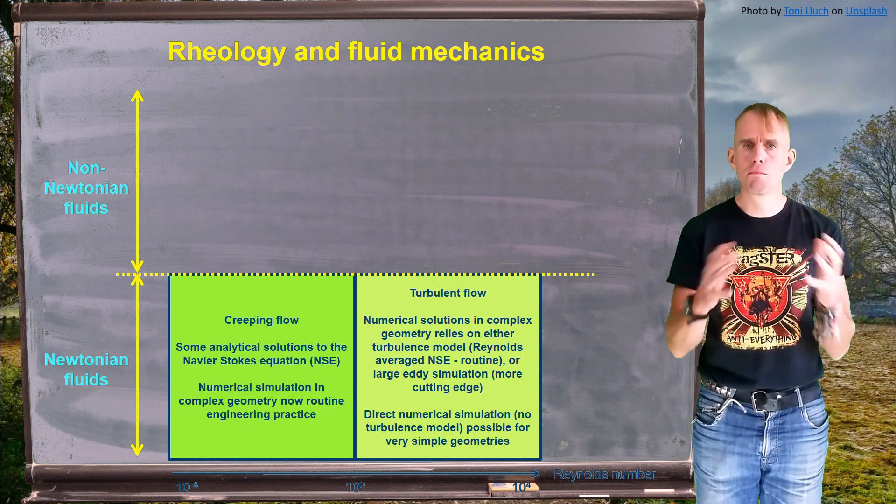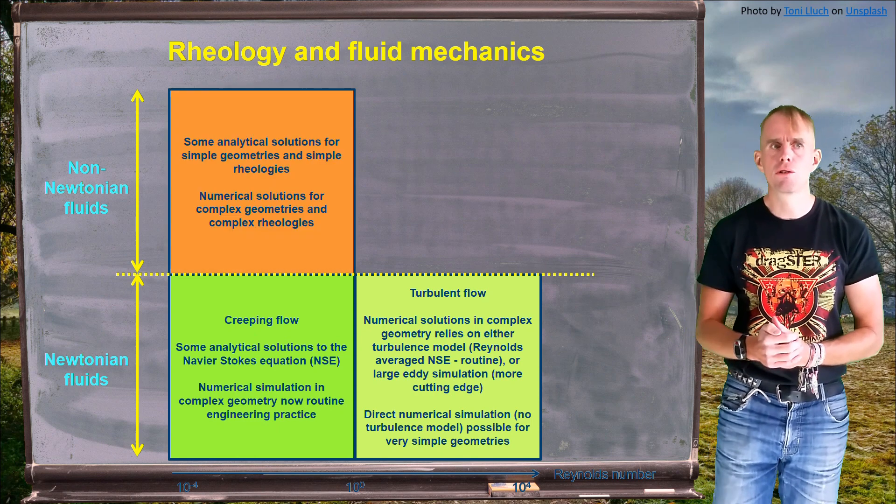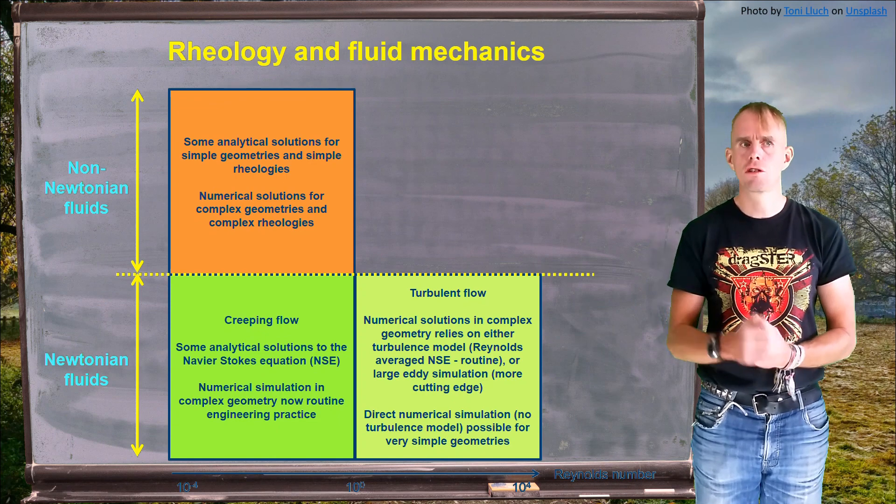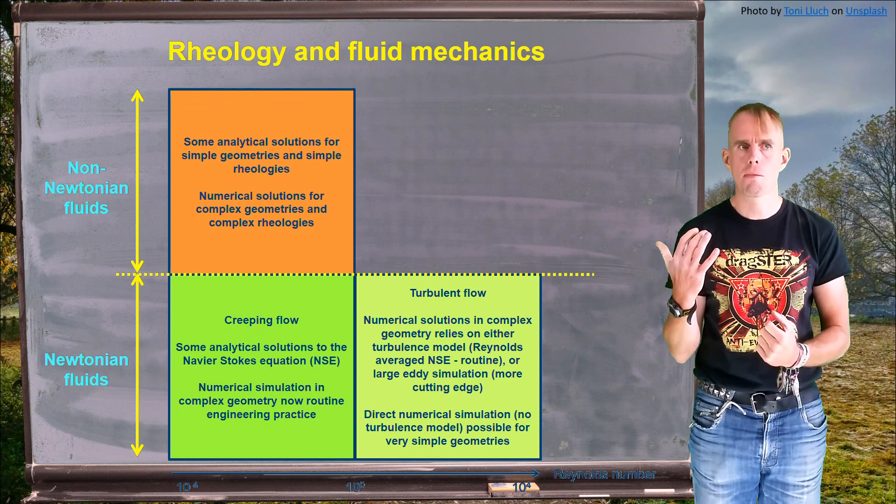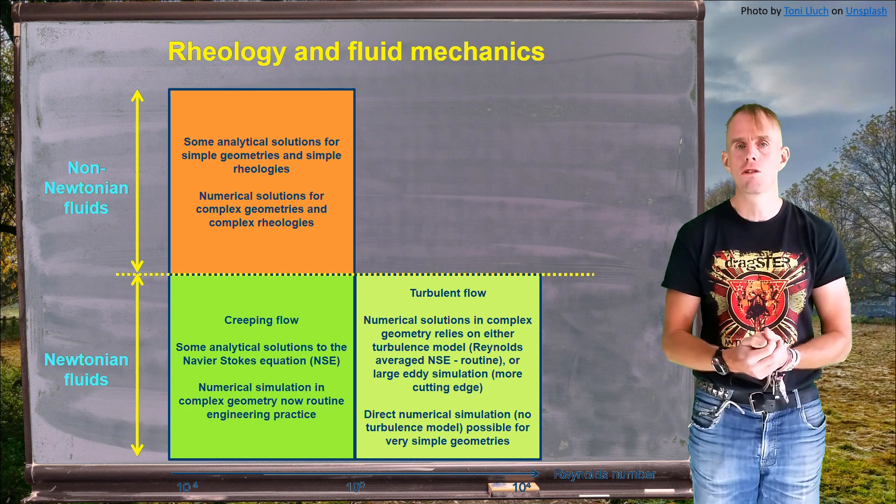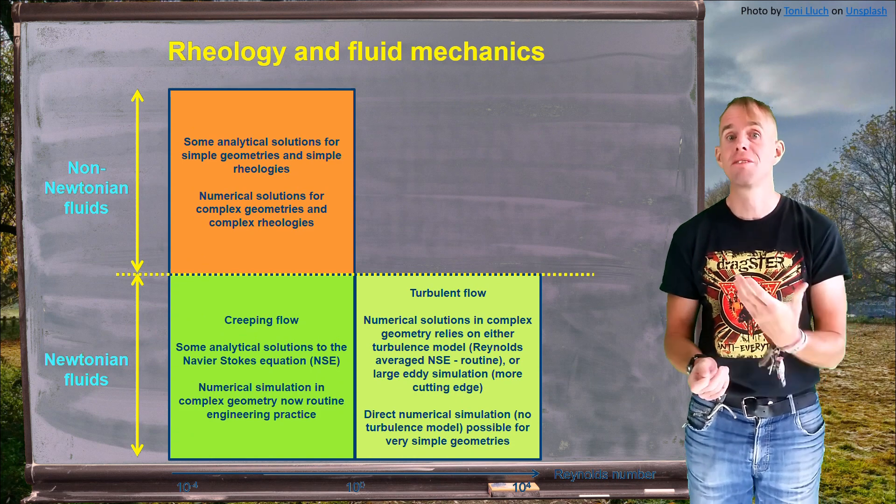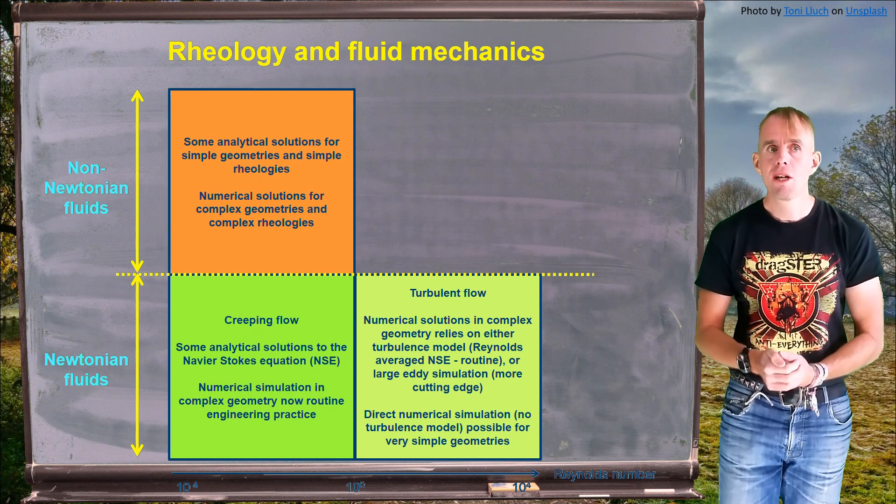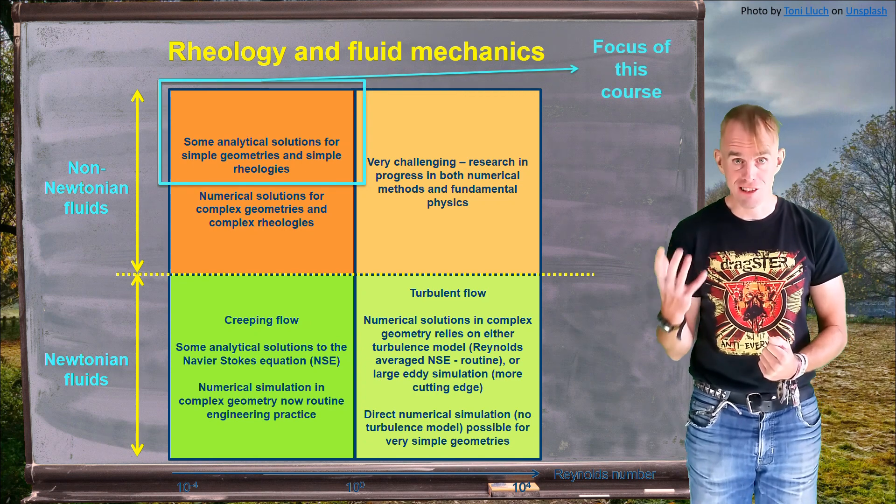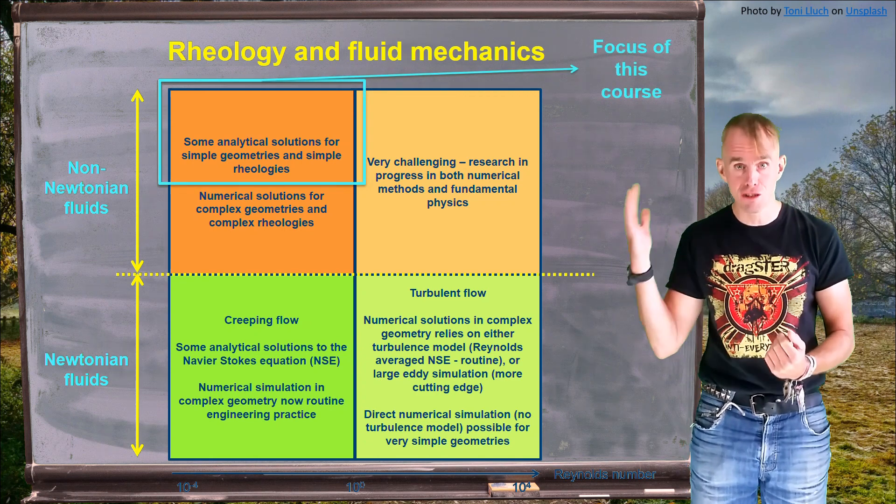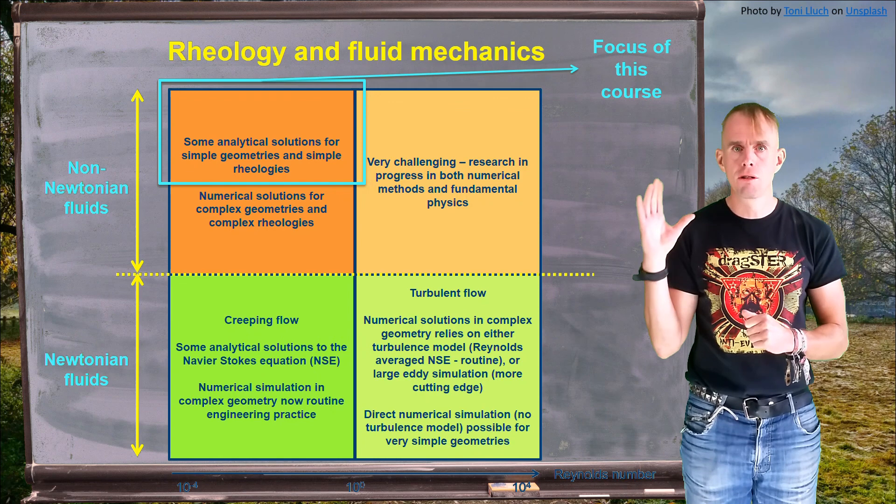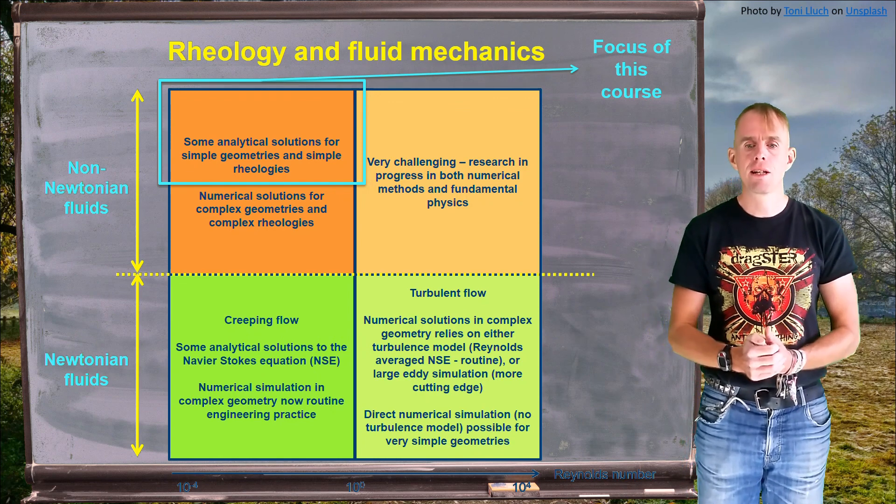If we think of these two broad ranges of Reynolds number, let's have a look at non-Newtonian fluids. Now, for the low Reynolds number range, you can get some analytical solutions for some simple geometries and some simple rheologies. You can also get numerical solutions for complex geometries and complex rheologies, although some of these numerical solutions are challenging due to, for example, the presence of elastic turbulence. If we are in high Reynolds number, where we have inertia also present, then this is still a very challenging research field. And if you want to take rheology further, this is a good thing to get involved in. So, the focus of this course really is on those analytical solutions for simple geometries and simple rheologies at fairly low Reynolds number.